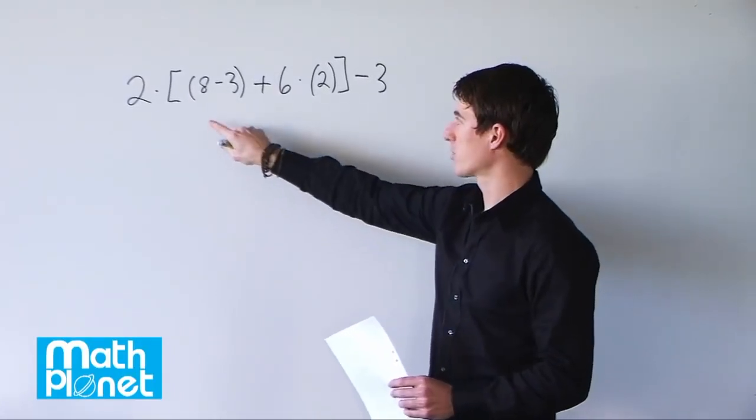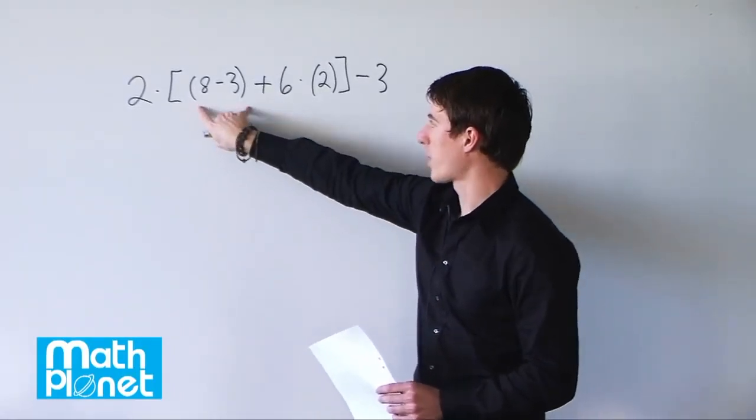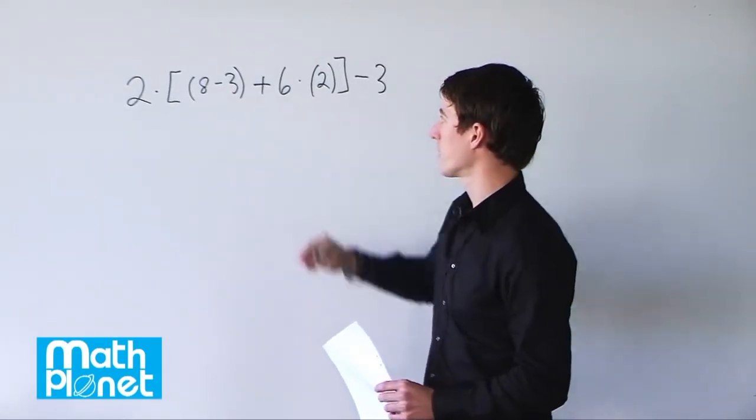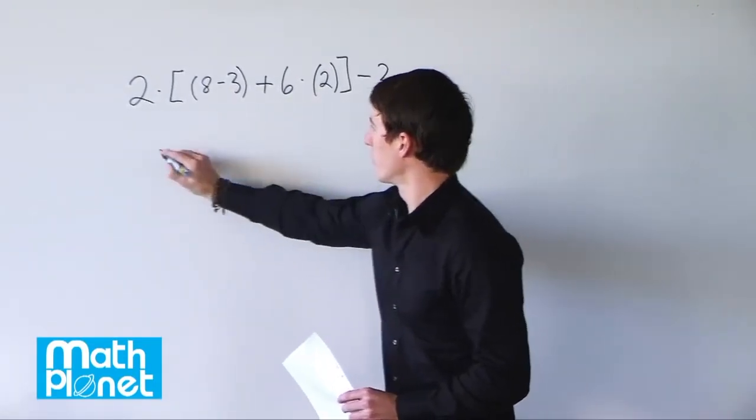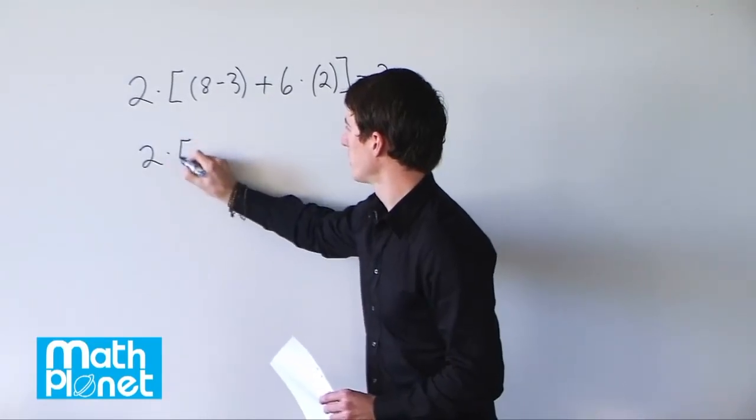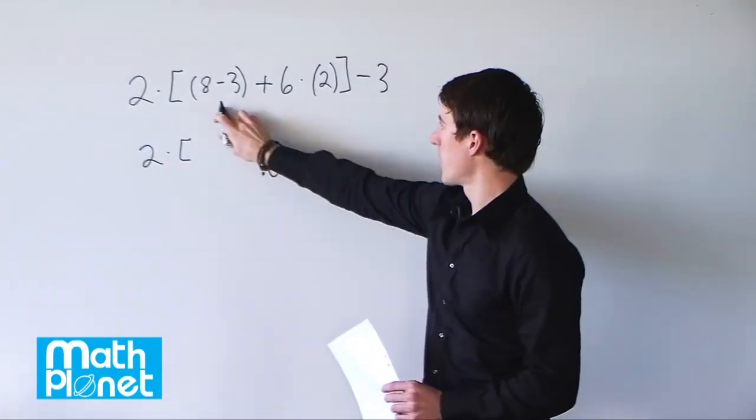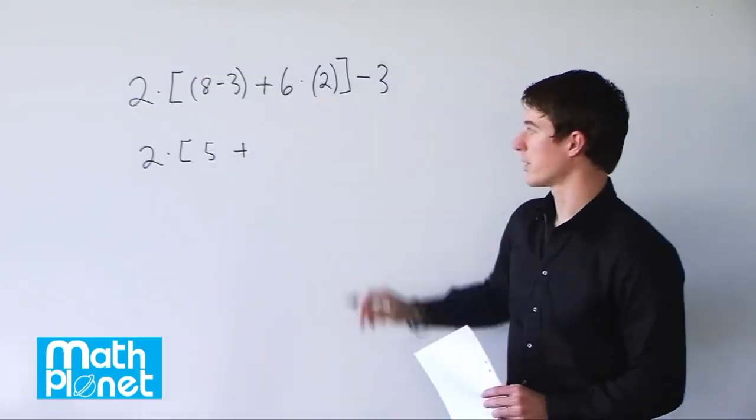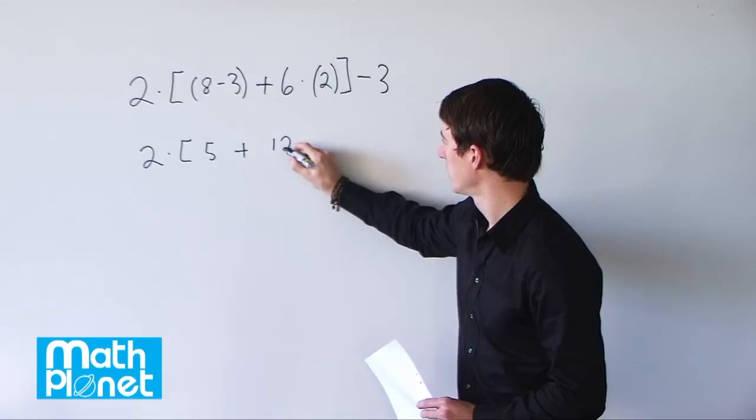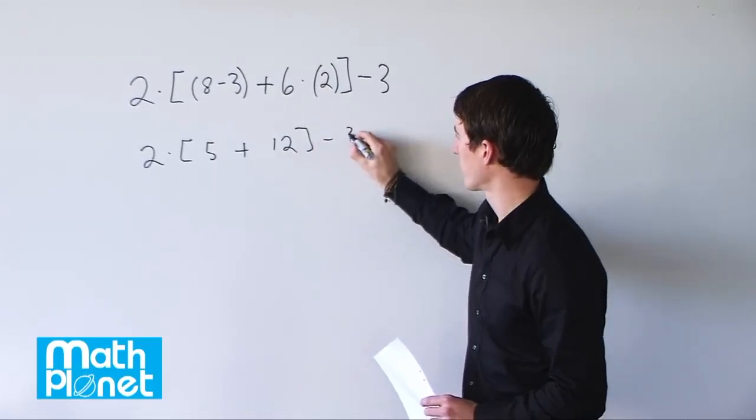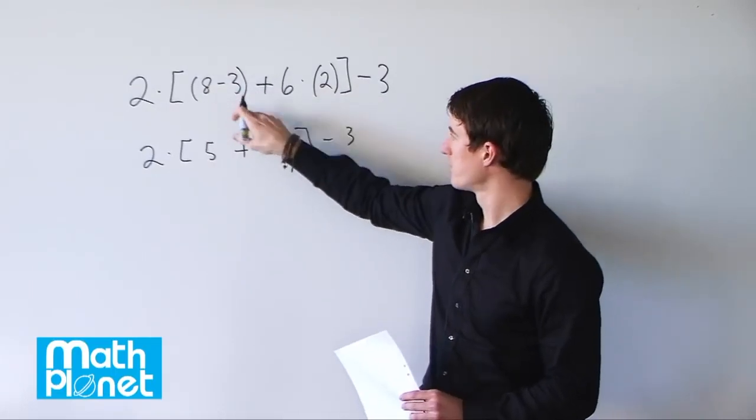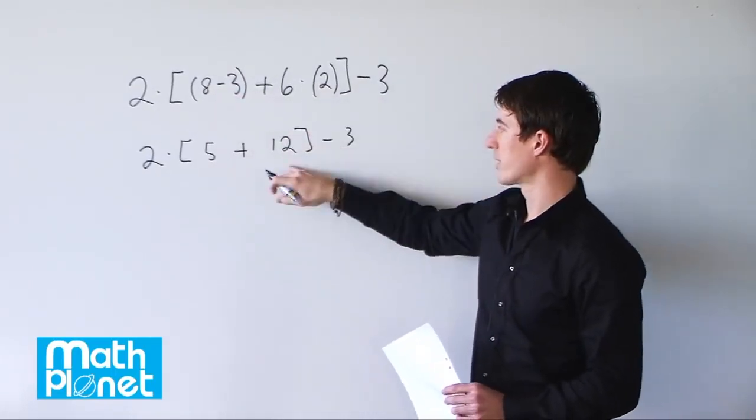So we need to remember PEMDAS, so we need to start with our brackets and our parentheses here, simplify down there, and then we can start to add and subtract. So if we leave the 2 outside of the bracket, 8 minus 3 becomes 5 plus 6 times 2 becomes 12 minus 3. So we've done the bracket first here, this parentheses, and we've done 6 times 2, so that takes care of that bracket.